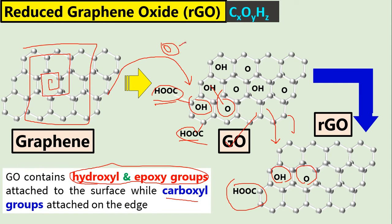Oxidized means it reacted with oxygen, which comes from different sources — I will explain that in the next video. But in this video I simply want to explain why we go for reduced graphene oxide: because reduced graphene oxide has similar properties to pure graphene.